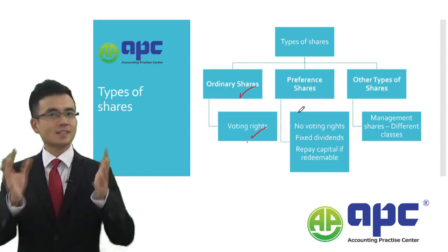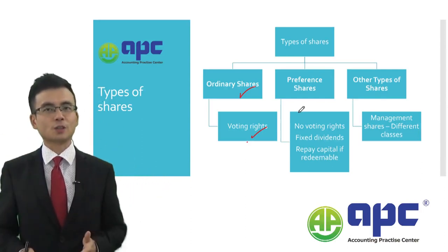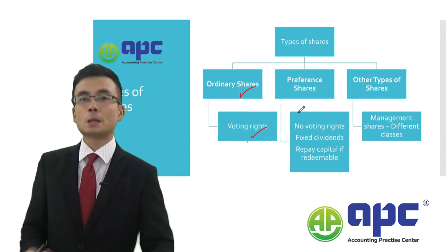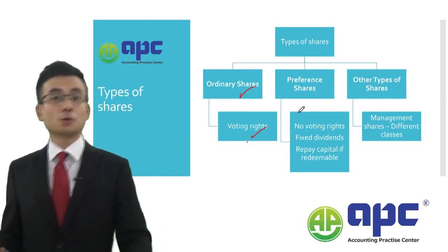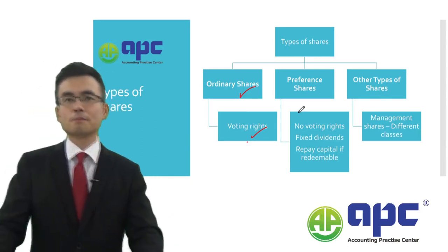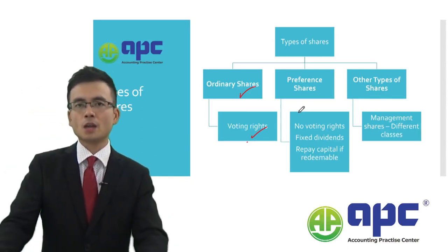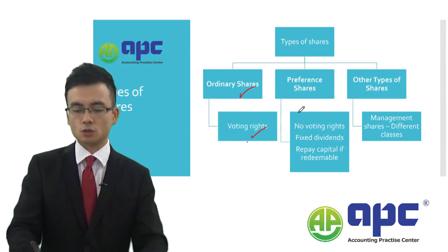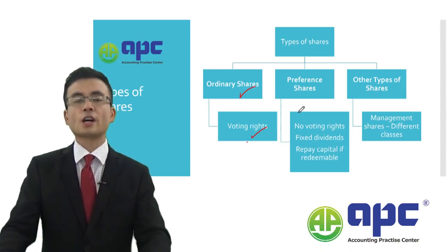As ordinary shareholders, you've got voting rights, because that's quite ordinary — that's quite usual. A business may also issue preference shares.